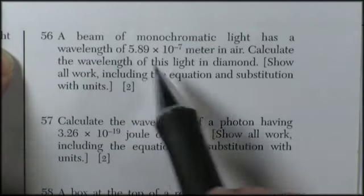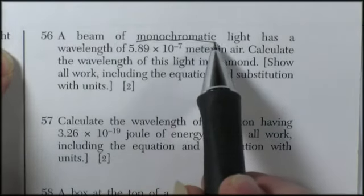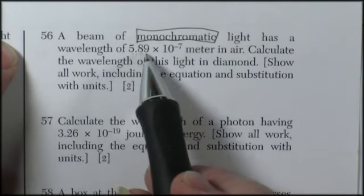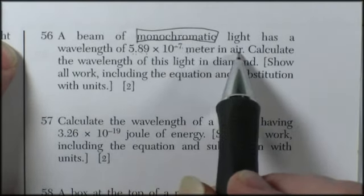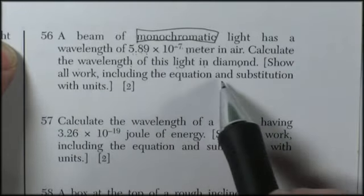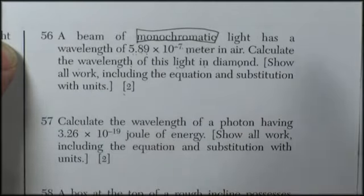Question 56. A beam of monochromatic, one color, has a wavelength of 5.89 times 10 to the negative 7 meters in air. Calculate the wavelength of this light in diamond. Show your work. Include the equation of substitutions with units.